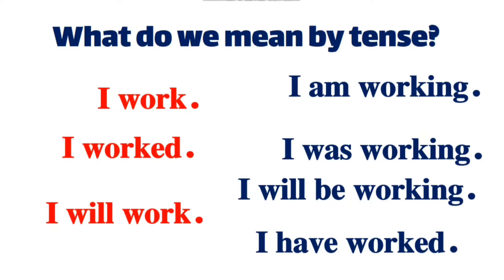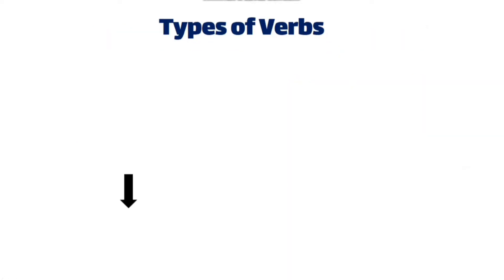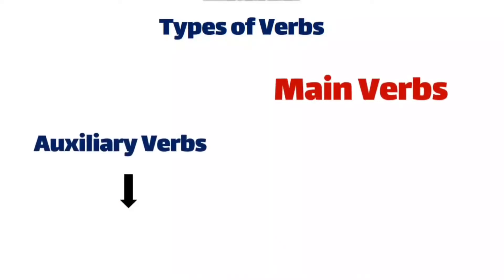Grammar is easy, as I said before. Now it's mandatory — it's important to know these forms. If the verb is in a particular form, how should I know that this is present continuous? How should I know that this is past continuous, future continuous, present perfect, or present perfect continuous? It's easy by paying attention to these different forms of verbs. There are mainly two types of verbs: auxiliary verbs and main verbs.